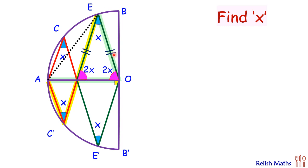That's it. We will apply the angle sum property in a triangle and we will get X plus 2X plus 2X is 180 or 5 times X is 180 or we will get X as 36 degrees and that's our answer.